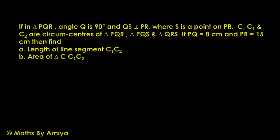If in triangle PQR, angle Q is 90 degrees and QS is perpendicular to PR, where S is a point on PR. C, C1, and C2 are circumcenters of triangle PQR, triangle PQS, and triangle QRS.